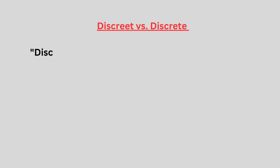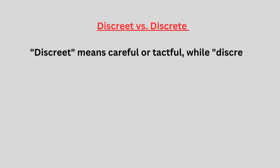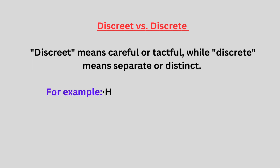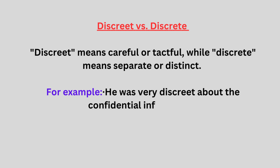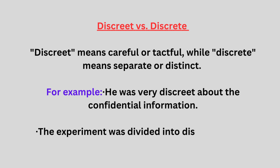Discreet versus discrete. Discreet means careful or tactful, while discrete means separate or distinct. For example, he was very discreet about the confidential information. The experiment was divided into discrete stages.